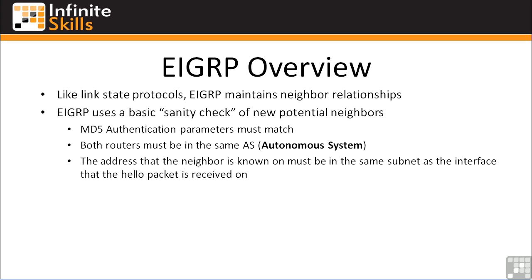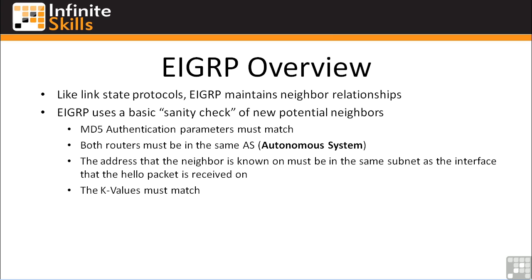Finally, the K-values must match. We'll talk about K-values when we discuss EIGRP in depth, but just realize that if the K-values are different between two neighbors, they cannot form neighbor relationships. You'll see why when we discuss what K-values are.